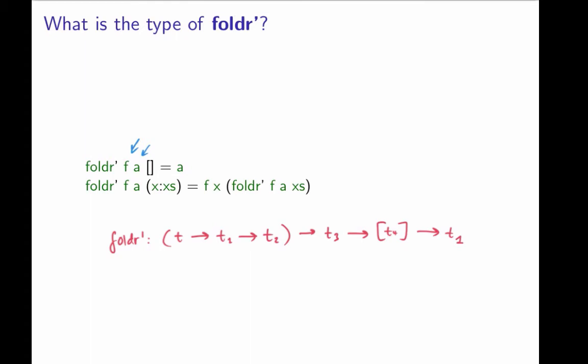Now, what about the type here? What kind of type do we have here? What's the type t4? Well, it's clear from this that x has type t4. And we see that f takes two arguments and the first one is x. So this is really just t.